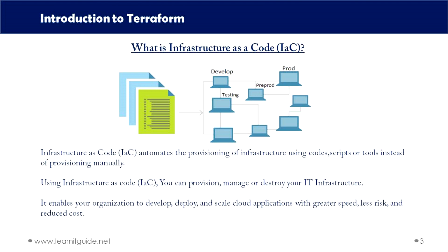Infrastructure as code acts like a blueprint for a particular infrastructure or its resources. With it, we can provision, manage, or even destroy our entire infrastructure. It enables our organization to develop, deploy, and scale out cloud applications with greater speed, less risk, and reduced cost. This is why we use infrastructure as code.